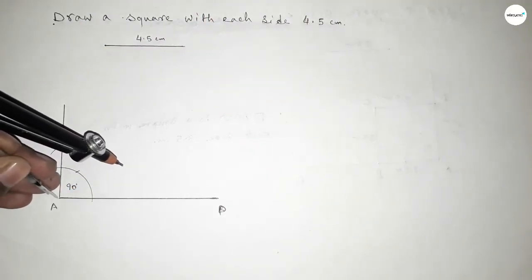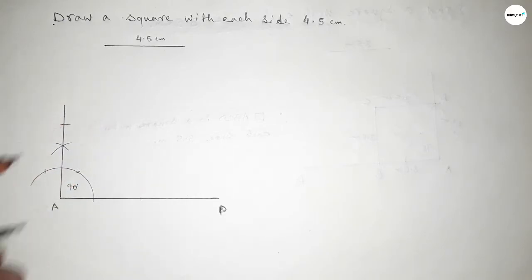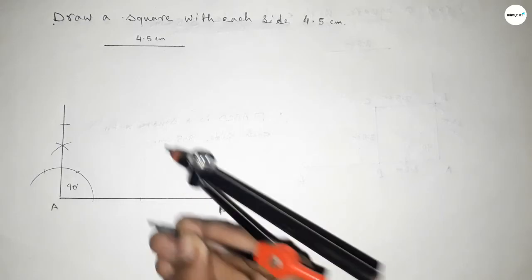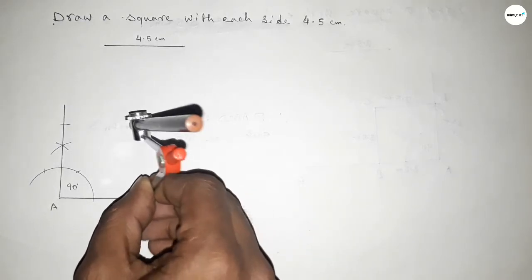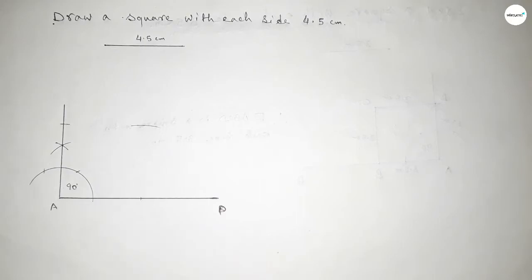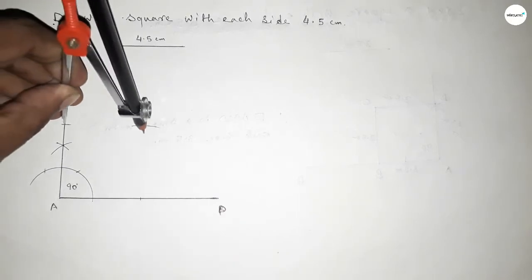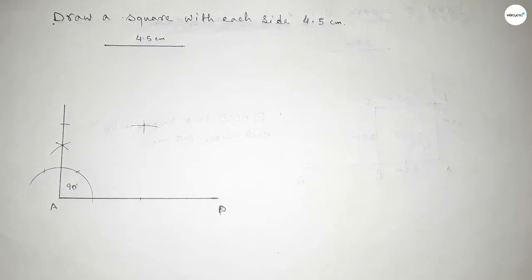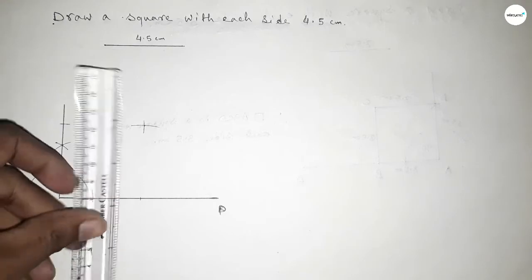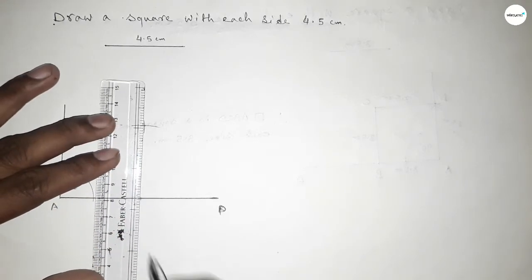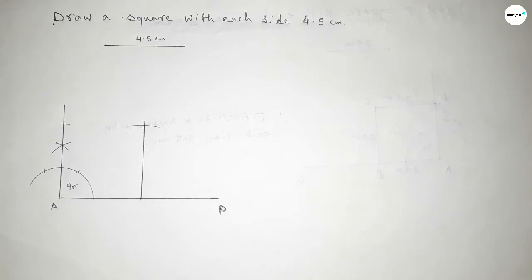Putting the compass here and cutting here, again with the same length. Putting the compass at the next position, drawing an arc with the same length, and cutting here. Both curves intersect at a point. Joining this side.